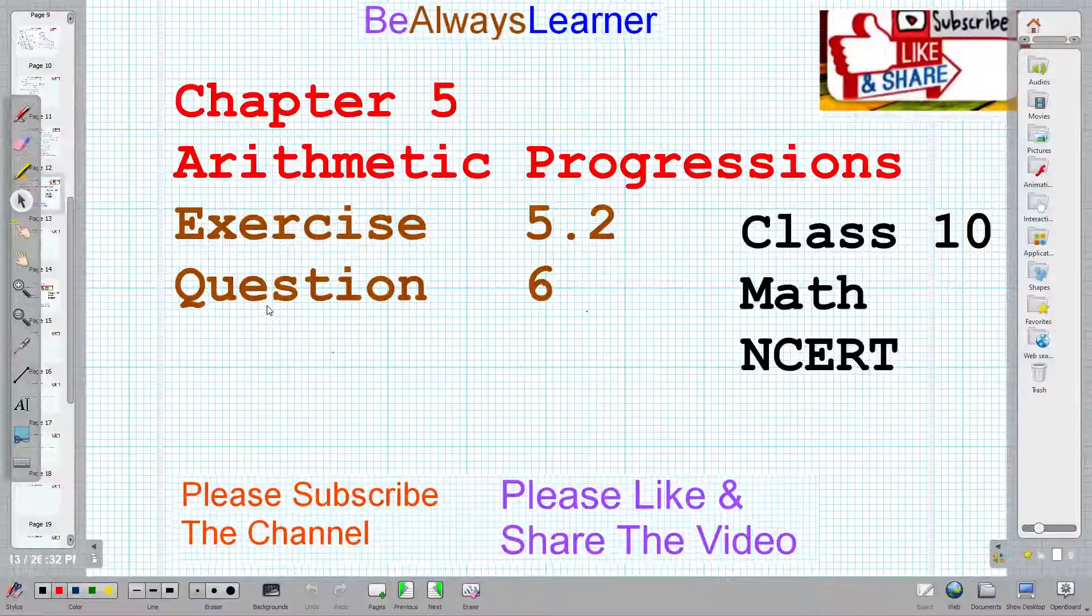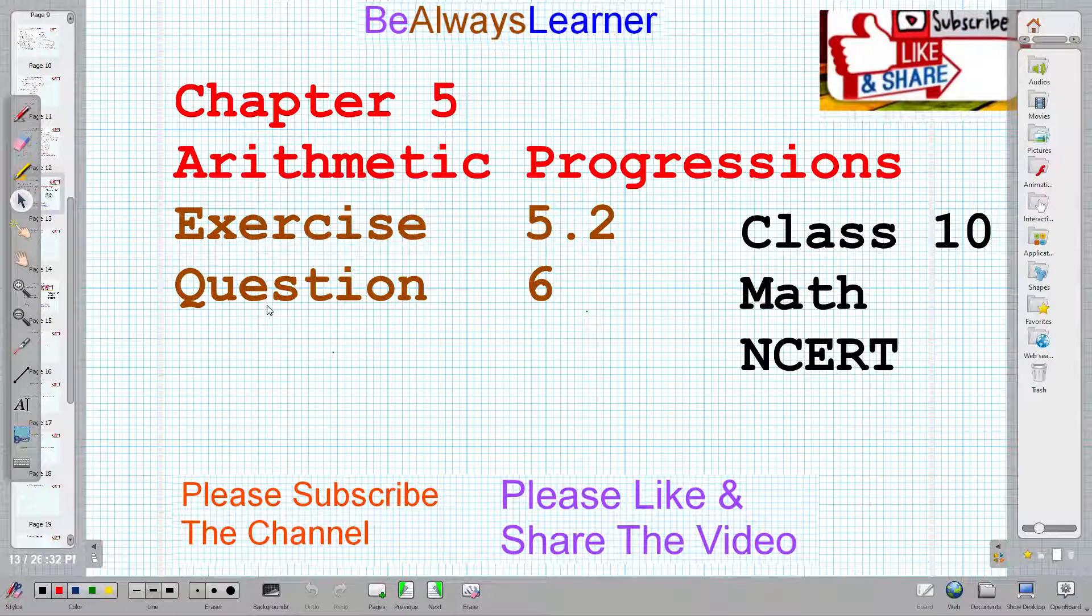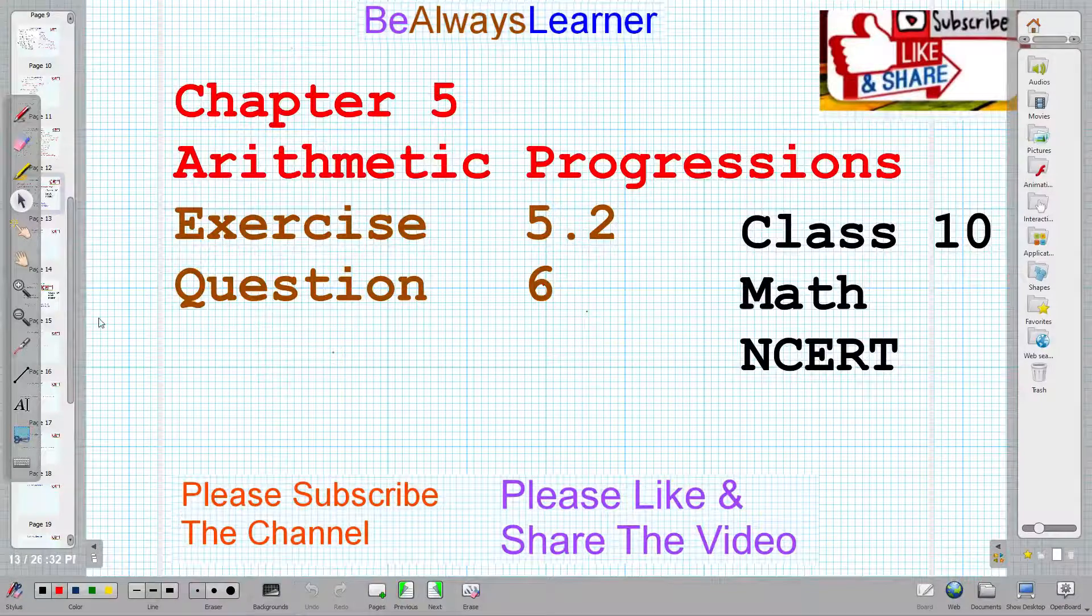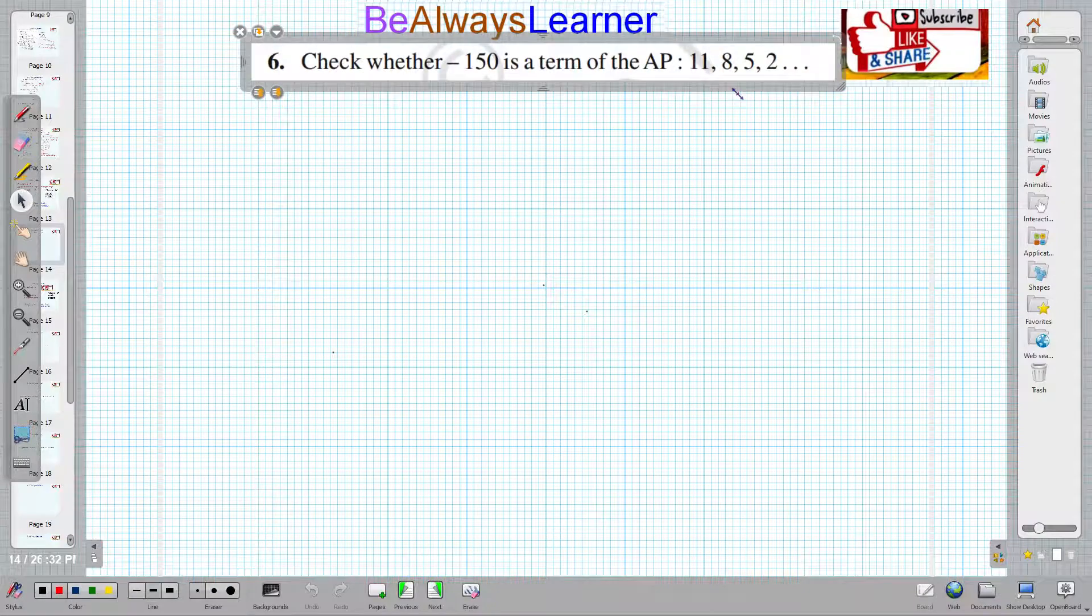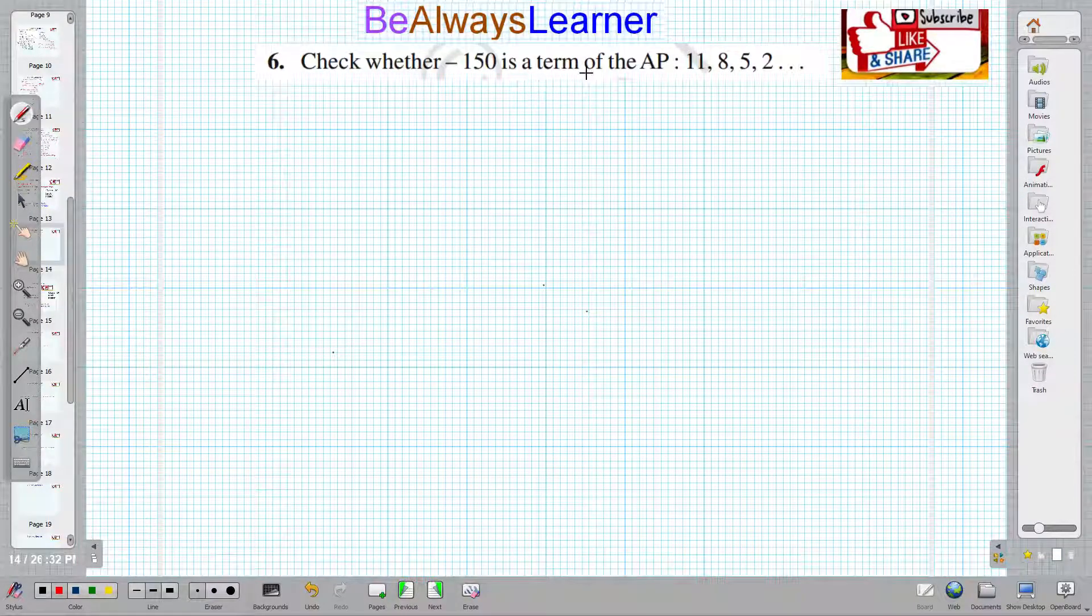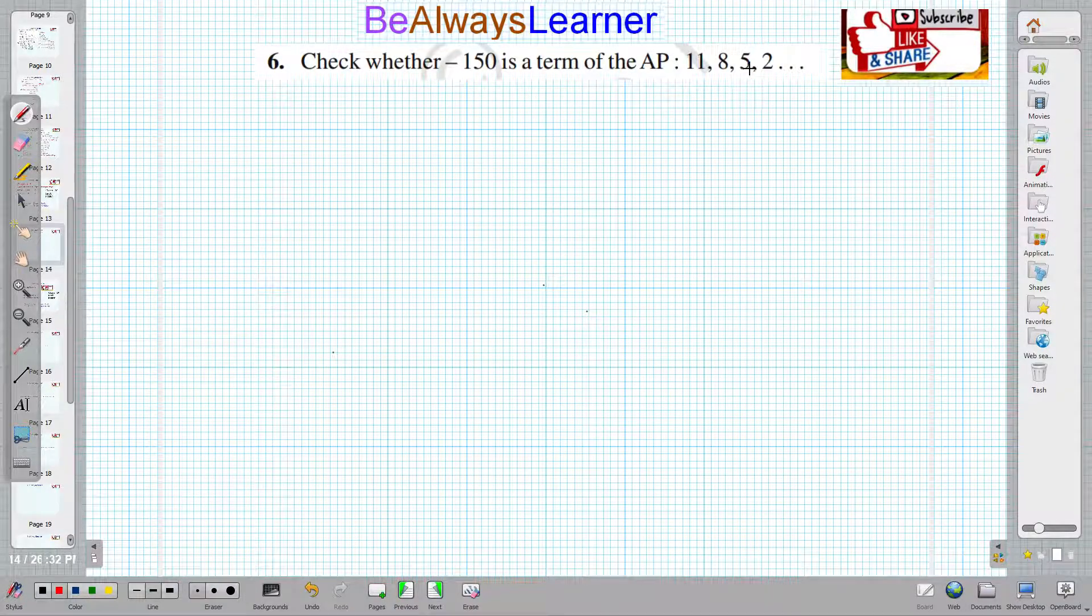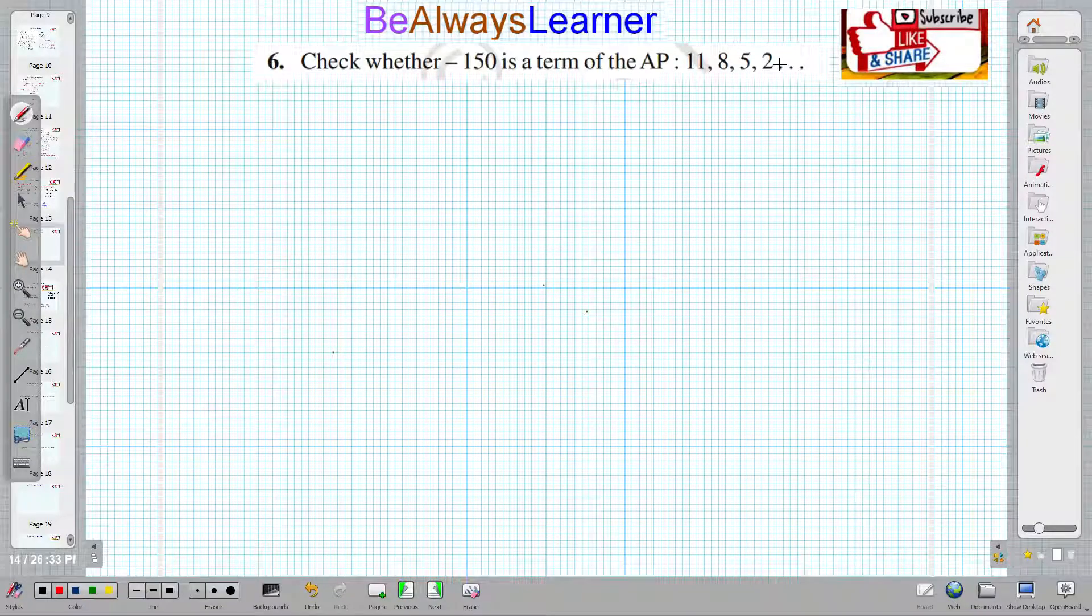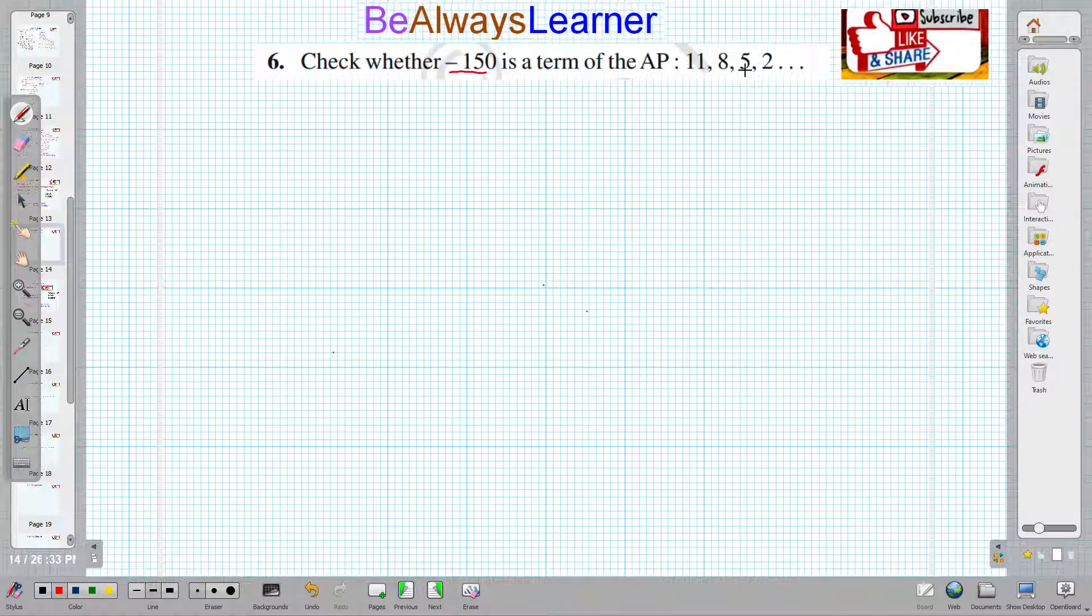Welcome to your channel BeAlwaysLearner. In this video, we are covering question number 6. The question is: check whether -150 is a term of the AP: 11, 8, 5, and 2. We need to check that -150 exists or does not exist in this series.